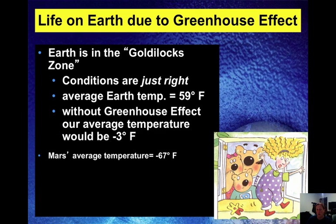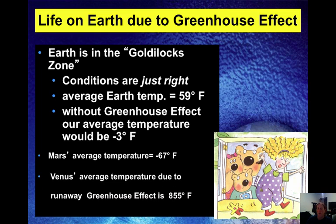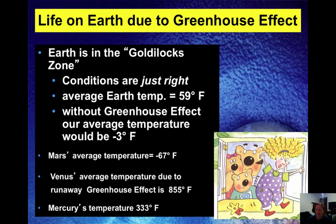Earth is in something known as the Goldilocks zone, which means conditions are just right for life as we know it. The average Earth temperature is 59 degrees Fahrenheit across Earth's surface. Without the greenhouse effect — without greenhouse gases trapping heat and acting as blankets — the average temperature would only be negative 3 degrees Fahrenheit. You can see how greenhouse gases are a necessary part of our atmosphere to keep life as we know it existing on Earth.